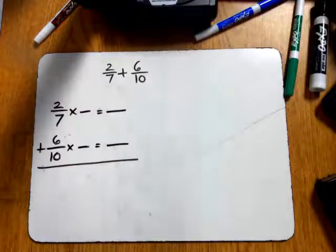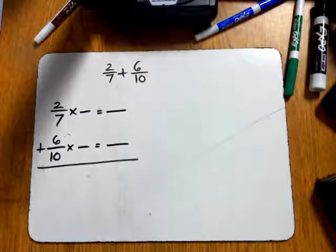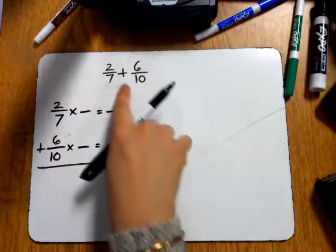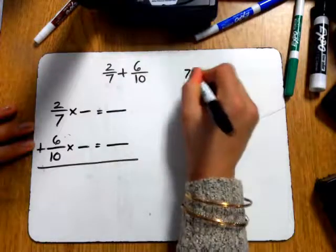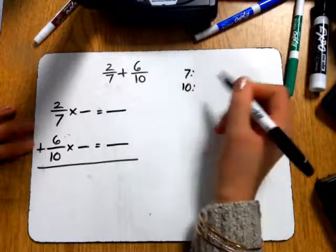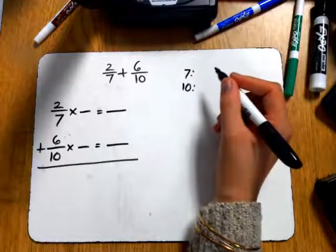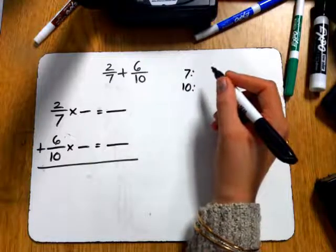Now, step 1 for when you are adding two fractions with unlike denominators is to find the least common denominator of 7 and 10. So I'm going to go up here, and remember, to do this, to find the least common denominator, you need to use multiples to find it.